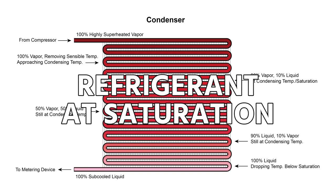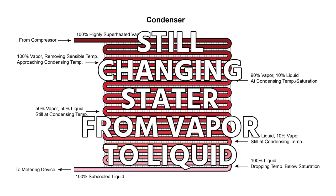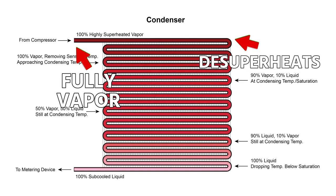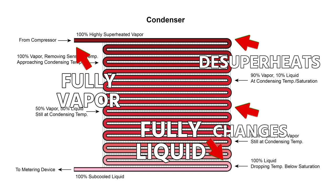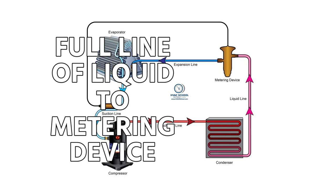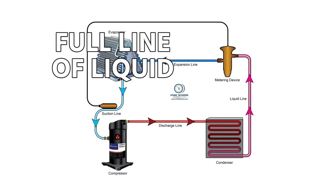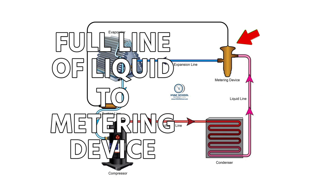When your refrigerant is at saturation, that means it's still changing state from vapor to liquid. So it starts off fully vapor, it desuperheats, and then it goes into this phase where it's changing. Once it drops below that, now we know that it is fully liquid. Our goal is to deliver a complete column of liquid to our metering device, which is why you're generally going to see around 10 degrees of subcool. Following manufacturer specifications, around 10 degrees of subcooling ensures that we're going to deliver a full line of liquid to our metering device on our liquid line.